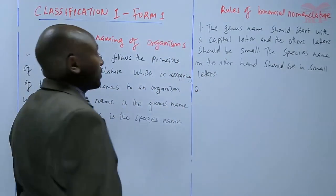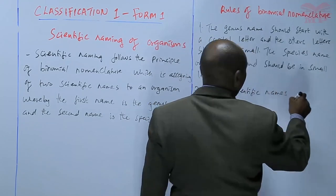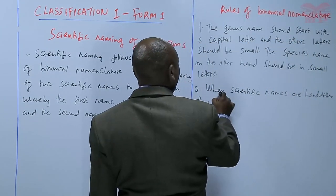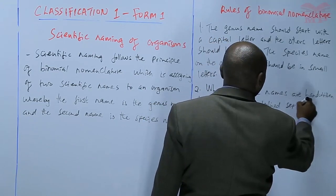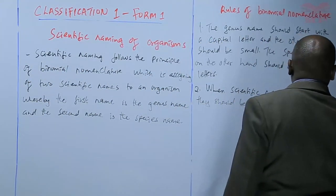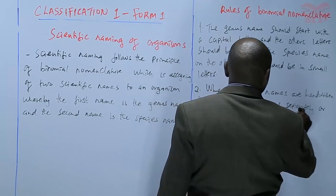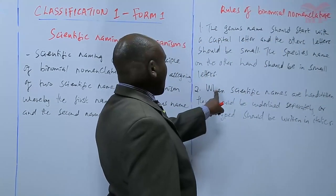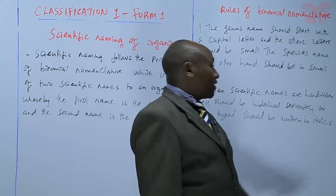Rule number two: when scientific names are handwritten, they should be underlined separately — that is, separately as two names. When typed, they should be written in italics. So if the scientific names are to be handwritten, they should be underlined separately, but when typed, they should be written in italics.